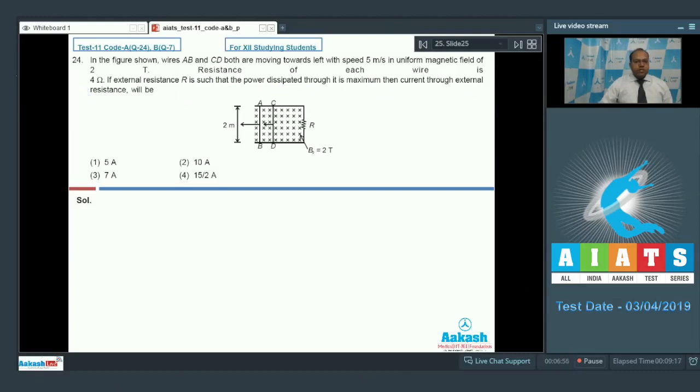then current through external resistance will be. So from the maximum power transfer theorem, we know that the internal resistance of the EMF of the cell must be equal to the applied load resistance. So it is given in the equation that the resistance of this wire and this wire is 4 Ohm each and they are in parallel. So their effective resistance is 2 Ohm. So the value of R must be equal to 2 Ohm.